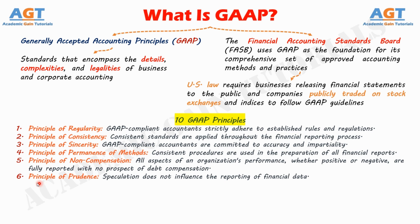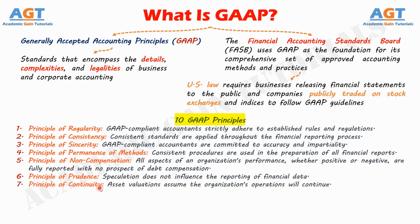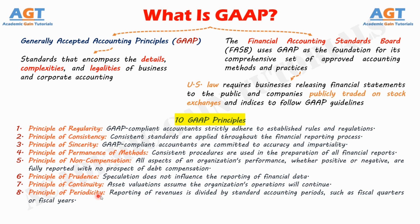6. Principle of Prudence, where speculation does not influence the reporting of financial data. 7. Principle of Continuity, where asset valuations assume the organization's operations will continue. 8. Principle of Periodicity, where reporting of revenues is divided by standard accounting periods, such as fiscal quarters or fiscal years.